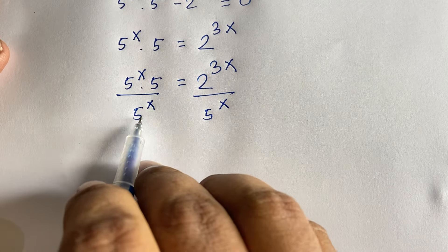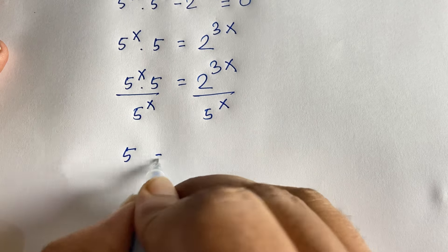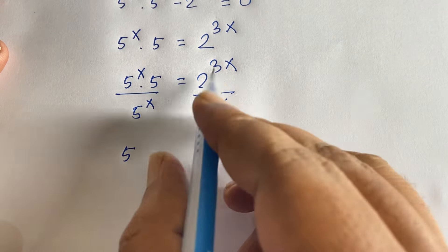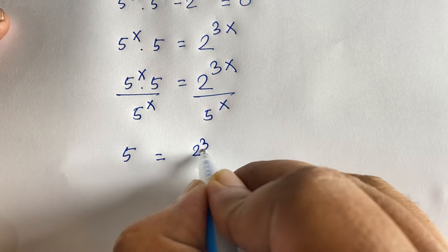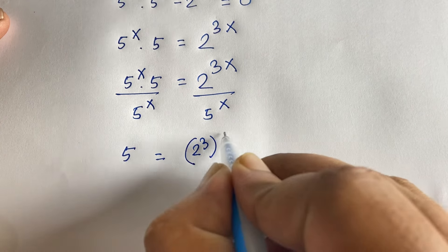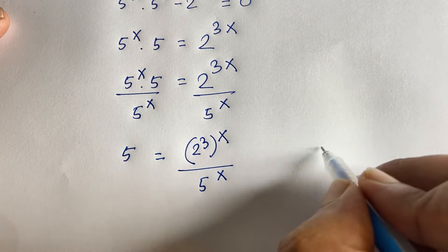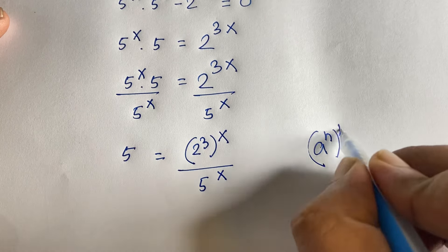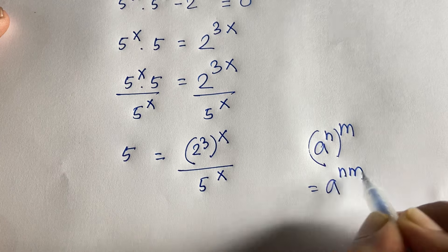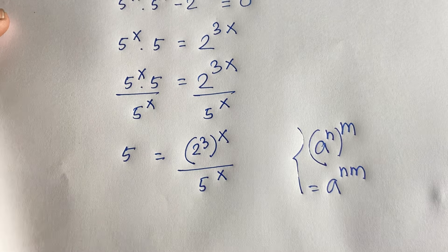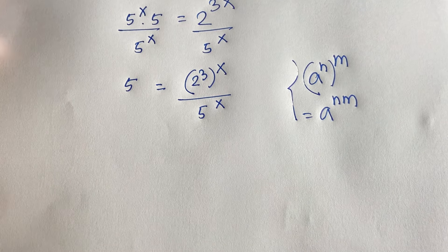The 2 to the power x cancels, leaving us with 2 on the left side. On the right side, 2 to the power 3x over 2 to the power x — we know that a to the power n all to the power m equals a to the power n·m, so it becomes 2 to the power 3 all to the power x.